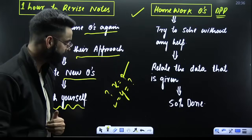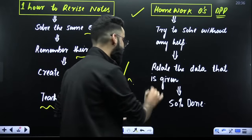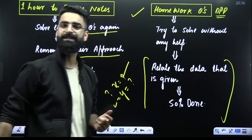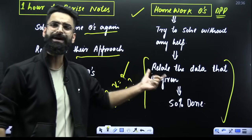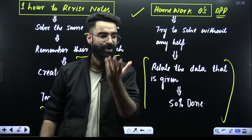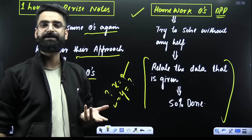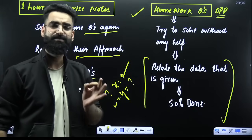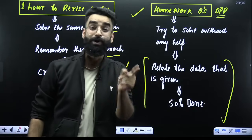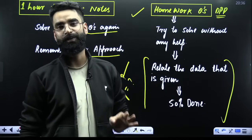So try to solve all the homework questions, which includes your DPP questions as well. There's a particular way of solving a question in physics. First of all, you need to learn how to read the question — specifically in physics.